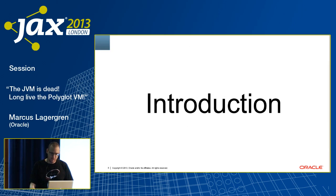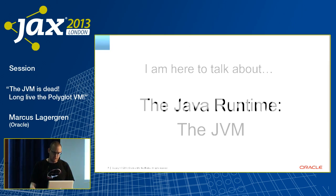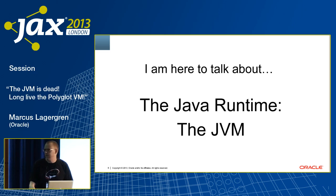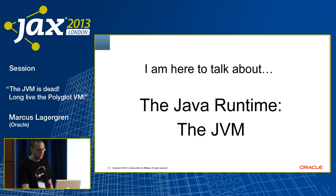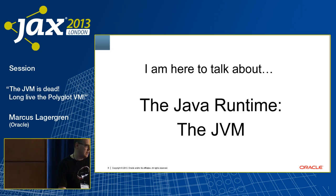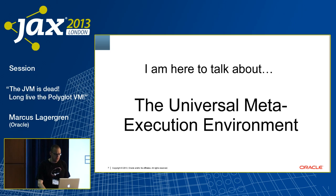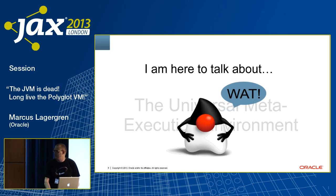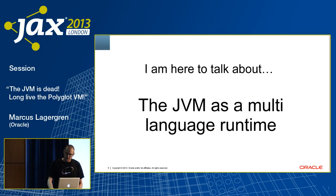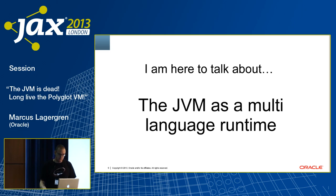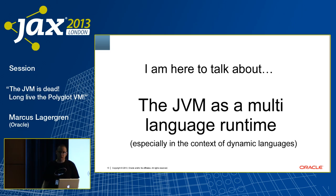I'm here to talk about the Java runtime, the JVM — that's the core of my presentation. But the JVM is rapidly turning into something else. A colleague at the office said that I'm really here to talk about the universal meta execution environment, which is a rather strange expression. It's all about the JVM as a multi-language runtime, especially in the context of dynamic languages, because that's what seems to be happening a lot now.